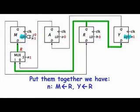Put them together, we have if N, R will be copied to M and R will be copied to Y.